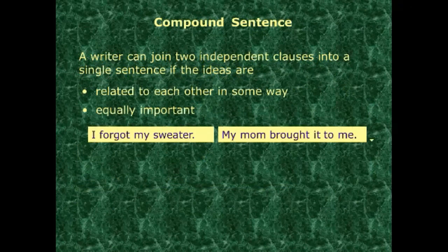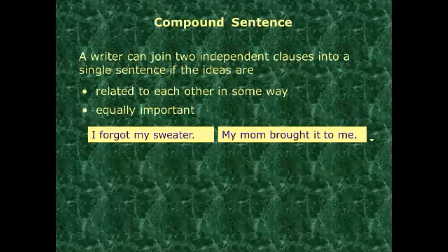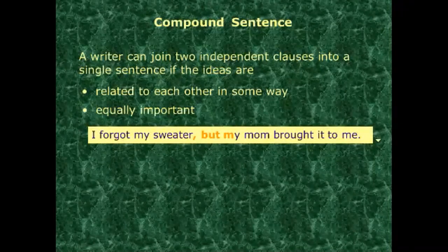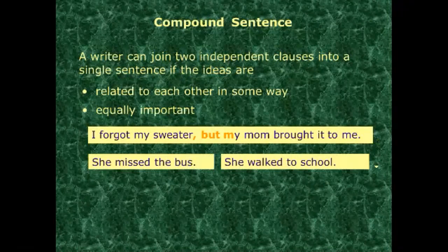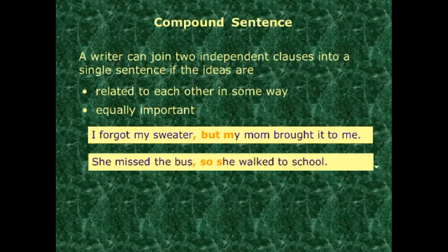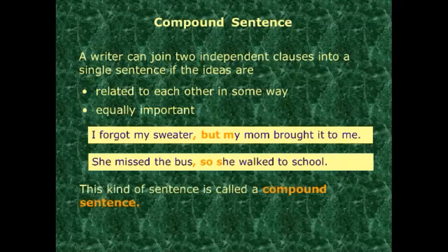A writer joins two independent clauses into a single compound sentence when the ideas are related or equally important. You can take two independent clauses and combine them using a coordinating conjunction. Example: 'I forgot my sweater, but my mom brought it to me.' Another: 'She missed the bus. She walked to school.' Joined: 'She missed the bus, so she walked to school.' The conjunctions here are 'but' and 'so' — these make compound sentences.